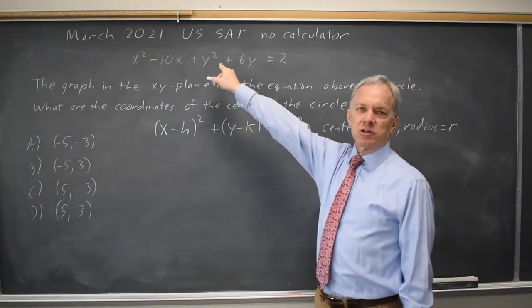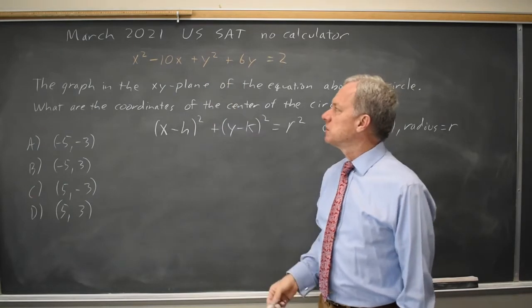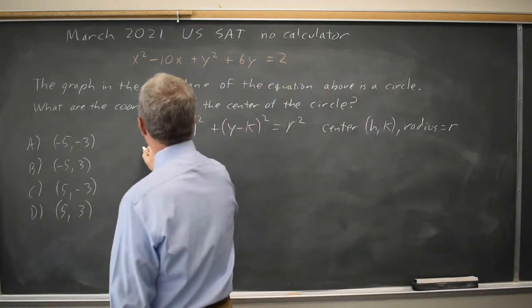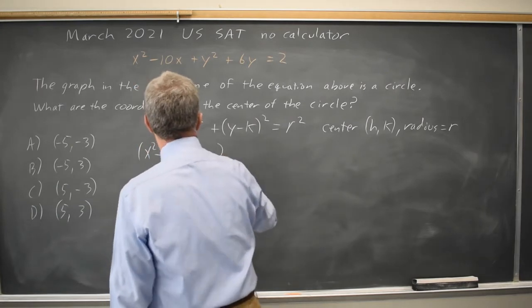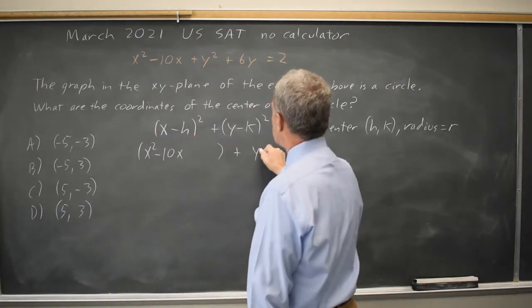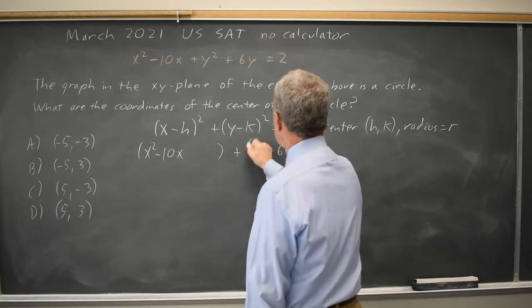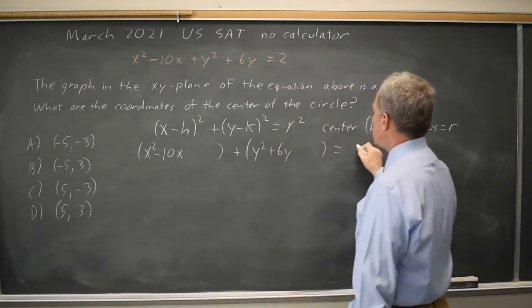To write the equation of the circle I'll want to complete the square. I'll rewrite what I have: x² - 10x and I'll leave a space to complete the square, plus y² + 6y and I'll leave a space to complete the square equals 2.